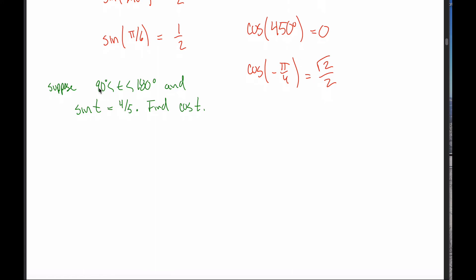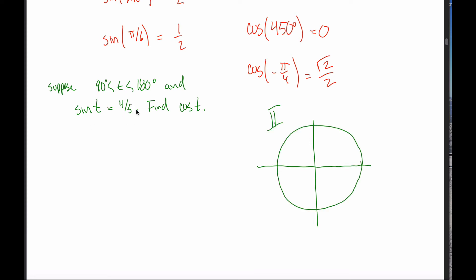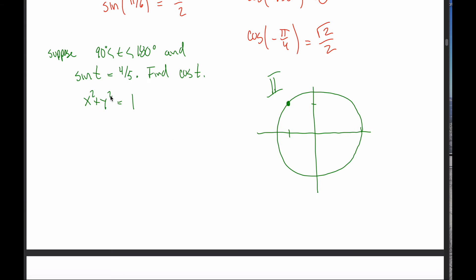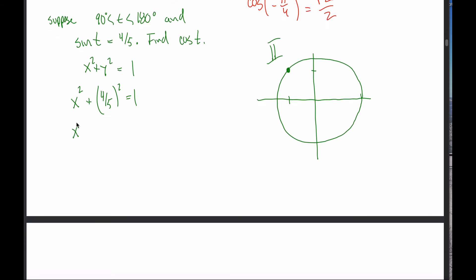Suppose t is between 90 degrees and 180 degrees — that tells us this angle is in the second quadrant — and that the sine of t equals 4 fifths. Remember, the sine of t refers to the y-coordinate, so this is really saying there's a point on the unit circle whose y-coordinate is 4 fifths, somewhere up here. I'm supposed to find its x-coordinate, the cosine of t. Because this is a point on the unit circle, its x-coordinate squared plus its y-coordinate squared must equal 1. Since the sine of t equals 4 fifths, the y-coordinate is 4 fifths, and I solve for x.